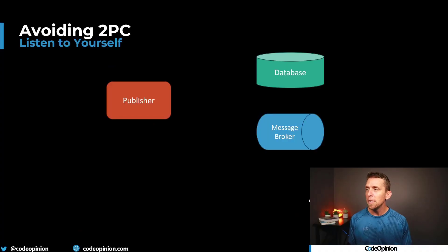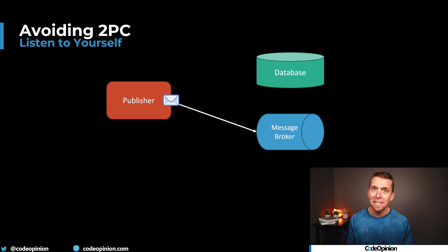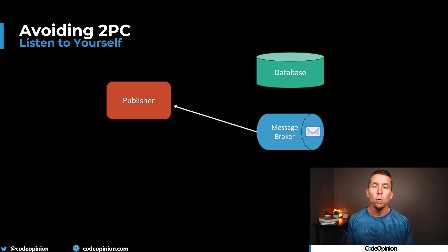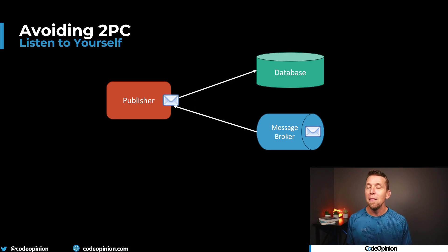So how does the listen-to-yourself pattern solve this problem? When we first get our request to place our order, rather than making a state change, what we're doing instead is publishing our order placed event first — hence the name listen to yourself. We then become our own consumer of that message that we published. From there we get our order placed event and then we can make our state change to our database.